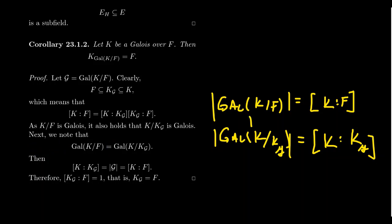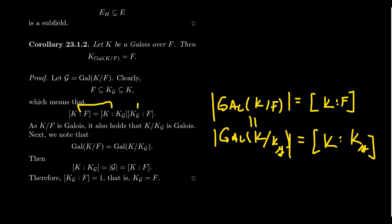Since the two Galois groups are the same, their orders are equal, giving [K:K_G] = [K:F]. Substituting back into the degree equation forces [K_G:F] = 1, and therefore K_G = F. Note that this proof assumes a finite Galois extension. You can prove the same result for infinite Galois extensions, but that requires a different approach, which is not how we'll handle it in this lecture series.